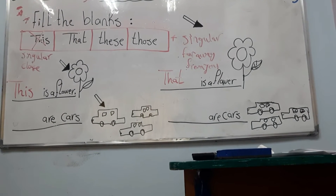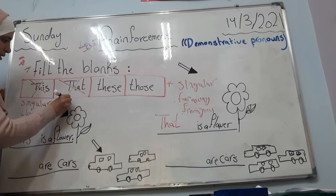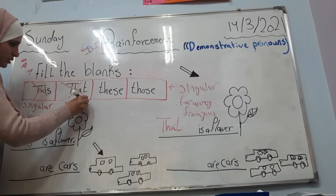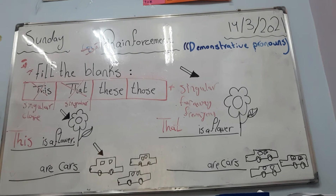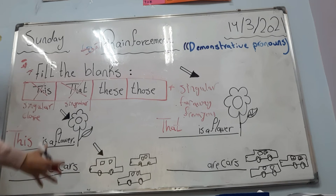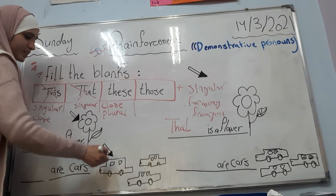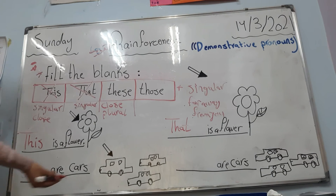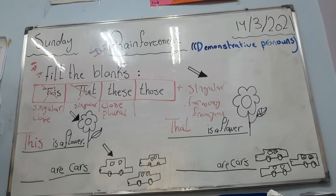Now let's go to the plural. Here singular, now plural. When we must use 'these' — here we have some cars. You have a group of something, it's plural, and it's close to you.